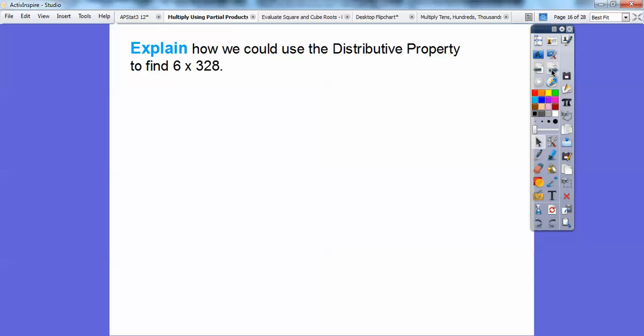Explain how we could use the distributive property to find 6 times 328. Well, we can expand 328 to 300 plus 20 plus 8. And then we can distribute through 6 times 300, 6 times 20, 6 times 8. 6 times 3 is 18, so 18 with two zeros.